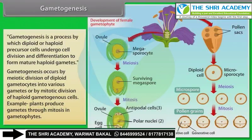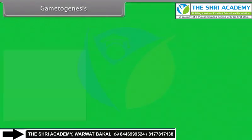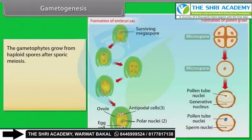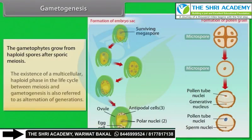Plants produce gametes through mitosis in gametophytes. The gametophytes grow from haploid spores after sporic meiosis. The existence of a multicellular haploid phase in the life cycle between meiosis and gametogenesis is also referred to as alternation of generations.